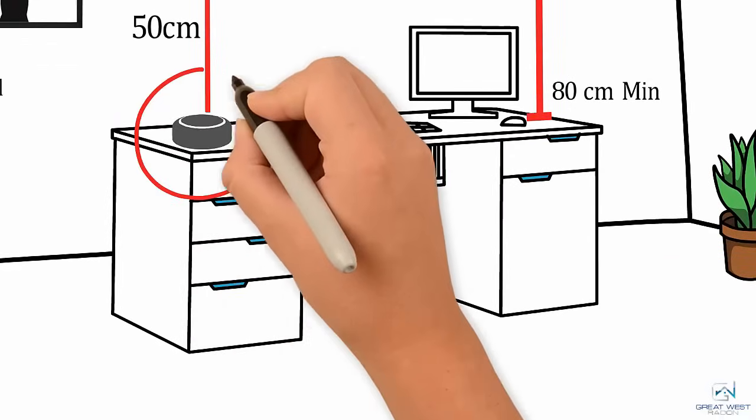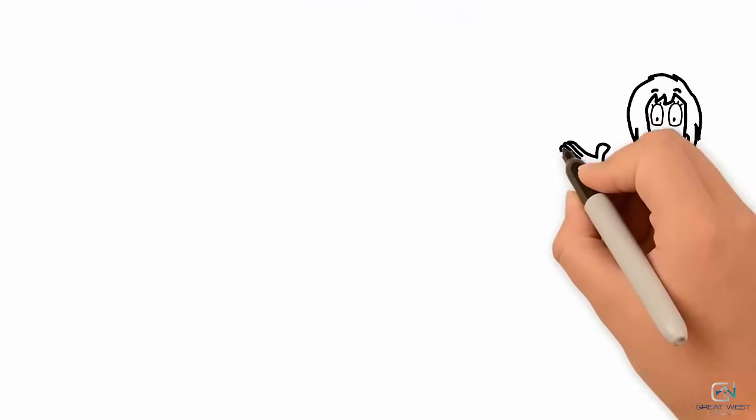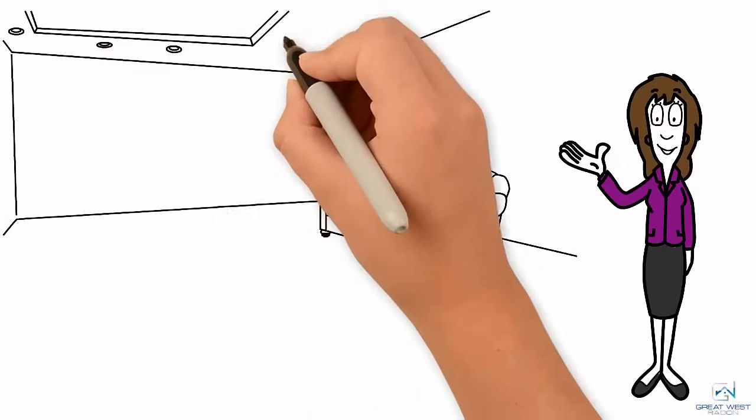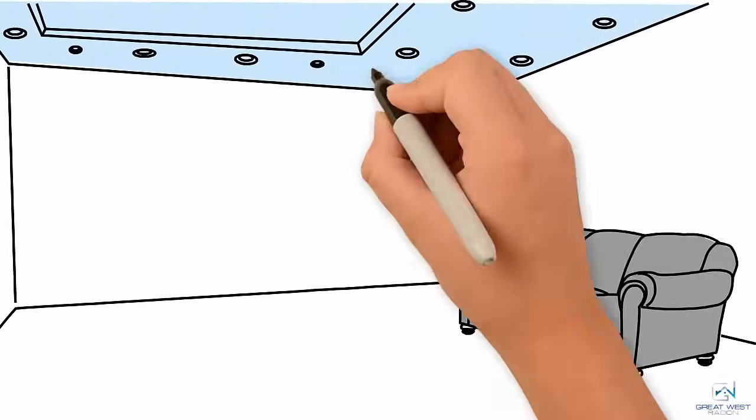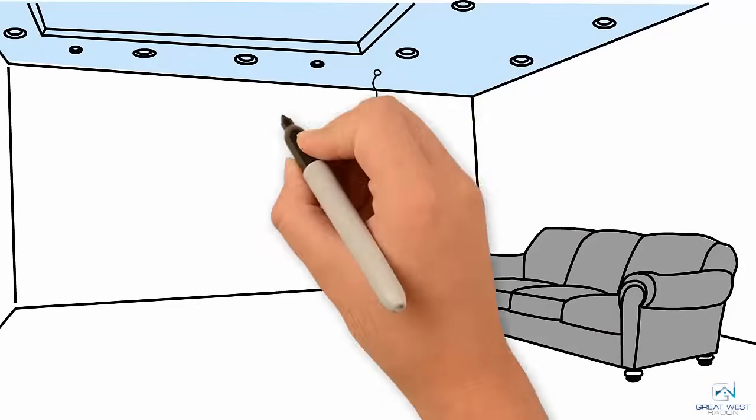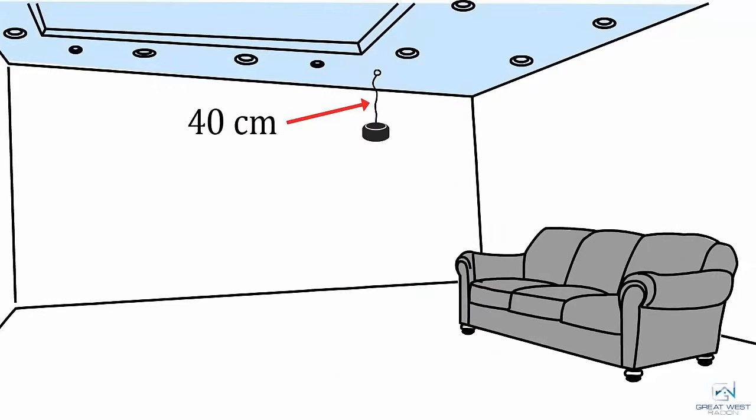There should also be a cleared area of about 20 cm around the testing device. A great way to ensure your testing device is out of the way and away from both interior and exterior walls is to hang your testing device from your ceiling using some string or fishing line, as long as your line is long enough to have the device 40 cm from the ceiling.